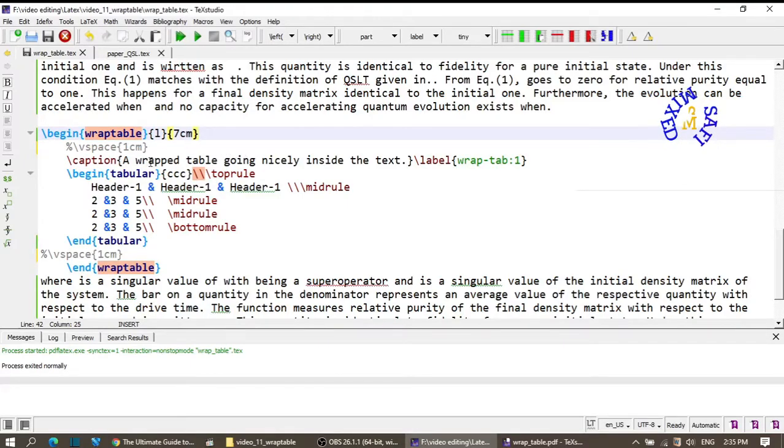To wrap text around table, we generate tables through tabular environment within the wraptable environment. The wraptable environment takes two additional and mandatory arguments. The first argument specifies the left or right position of the table on the page.